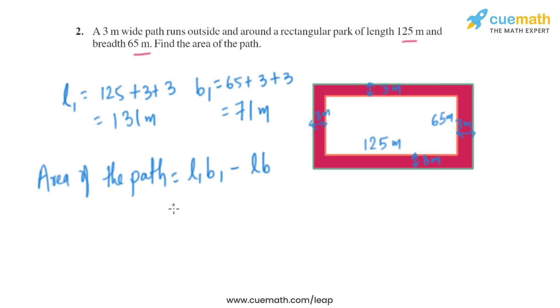Now the area of the path is basically area of outer rectangle minus area of inner rectangle. So the dimension of outer rectangle we know that is L1 and B1, that is 131 meter and 71 meter. So the area of the outer rectangle will be 131 multiplied with 71 minus the area of the inner rectangle that is L times B, so L times B is given in the question, that is 125 into 65.